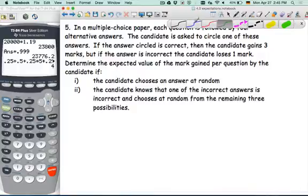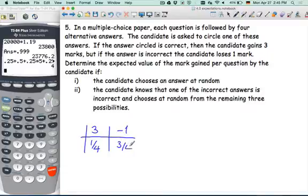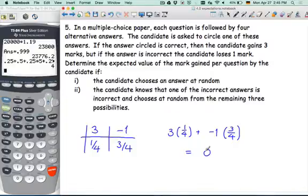So you get three marks one quarter of the time, but you lose a mark the rest of the time, three quarters of the time. So the complement of one out of four is three out of four. Three times one fourth plus negative one times three fourth. So the expected value of this test score for a candidate that knows nothing and just treats it like a monkey is zero.